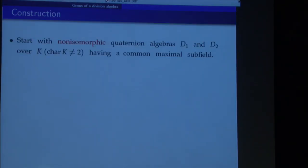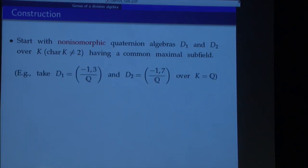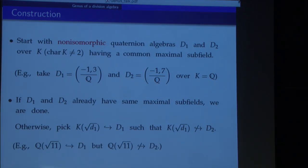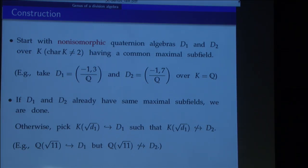We start with two non-isomorphic quaternion algebras D1 and D2 that have a common maximal subfield. Concretely, we can take the first one ramified at 2 and 3, and the other ramified at 2 and 7, over the field of rational numbers. Usually these algebras don't have the same maximal subfields — we have an extension that embeds into one but not the other. In this concrete case, 11 is not a square mod 3, so Q(√11) embeds into D1; but 11 is a square mod 7, so Q(√11) does not embed into D2.